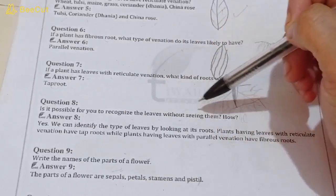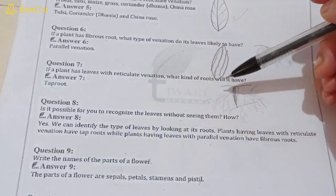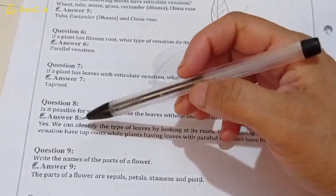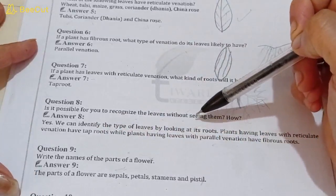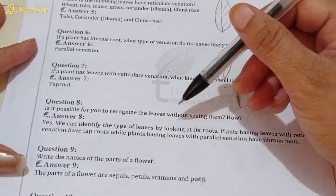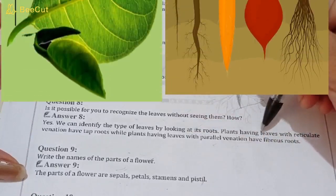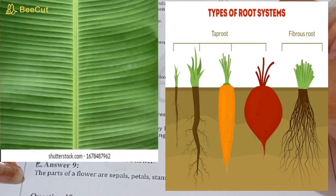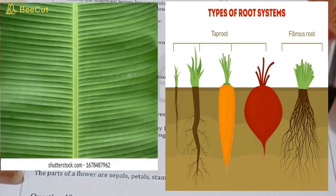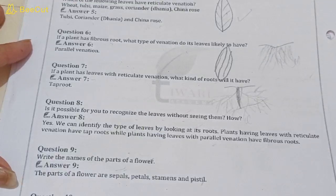Question number eight: is it possible for you to recognize the leaves without seeing them? Can you tell which leaves they are without seeing them? Yes, we can identify the types of leaves by looking at its roots. We can tell by looking at their roots what type of leaves they will have. Leaves with reticulate venation have taproots, and those with parallel venation have fibrous roots.